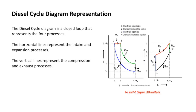Now let's see how to represent the diesel cycle diagrammatically. The first diagram is the pressure-volume diagram. From 1 to 2, we have isentropic compression. From 2 to 3, we have constant pressure heat addition. From 3 to 4, we have isentropic expansion. From 4 to 1, we have constant volume heat rejection, in which the volume is constant. The second diagram is the temperature-entropy diagram, where from 1 to 2 we have isentropic compression at constant pressure.